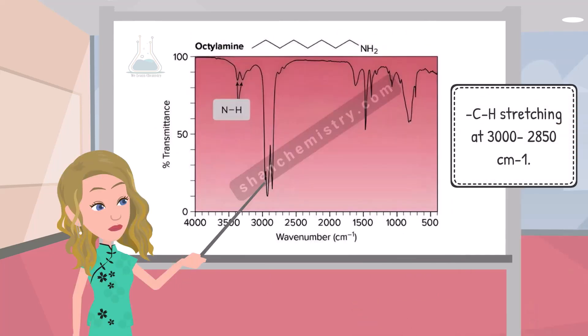The carbon atom from an alkyl group in the amines is sp3 hybridized, so the CH stretching in the amine's IR spectrum is observed at 3,000 to 2,850 per cm.